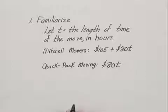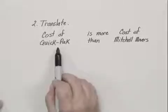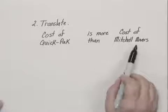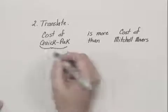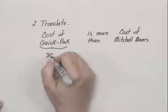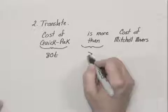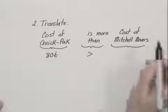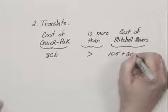We can move to our translate step. First, we write in English what we're looking for: we want the cost of Quick Pack to be more than the cost of Mitchell Movers. The cost of Quick Pack is 80t, 'is more than' translates to 'is greater than,' and the cost of Mitchell Movers is 105 plus 30t.